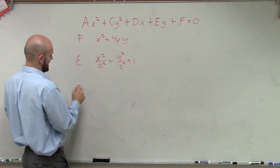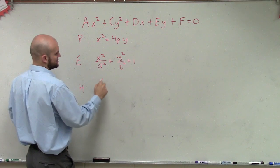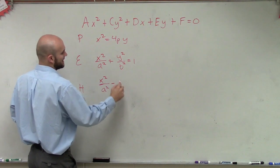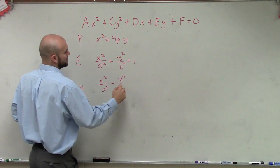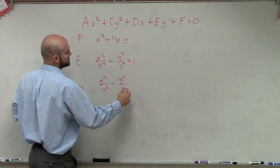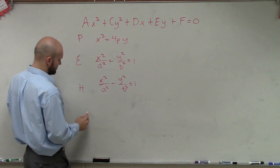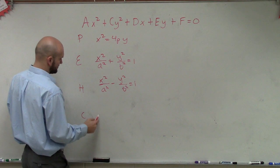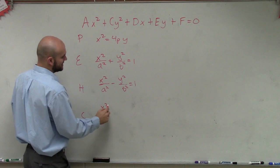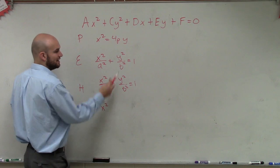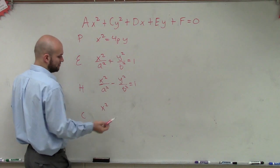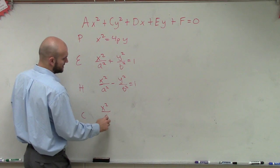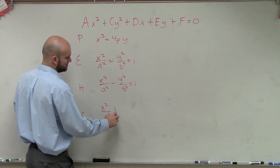We had a hyperbola, which was x squared over a squared minus y squared over b squared equals 1. And then we also talked about a circle, where a circle is a special type of ellipse — a circle is when a and b are equal to each other, so we can just use a squared for each one.